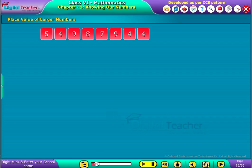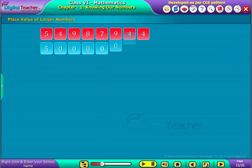Here is the number 54987944. Let's see how it is placed with their place values. Here, 5 is in crores place.